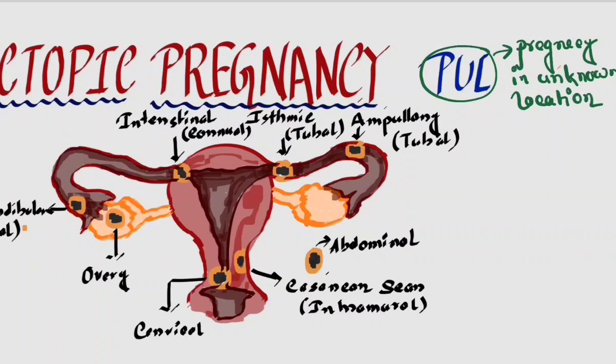In normal pregnancy, implantation occurs in the intrauterine cavity. This is the intrauterine cavity. But in ectopic pregnancy, implantation cannot occur in the intrauterine cavity — it occurs outside of the intrauterine cavity.